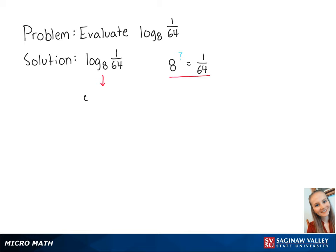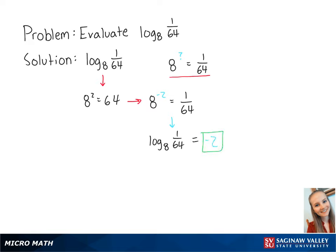We know that 8 squared equals 64. So using our exponent rules, we know that 8 to the negative 2 equals 1 over 64. Therefore, the log base 8 of 1 over 64 is equal to negative 2. This is the final answer.